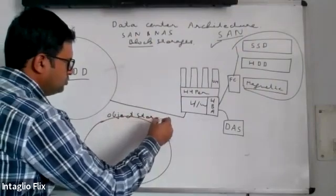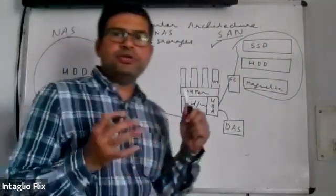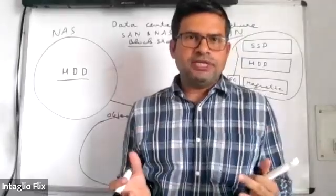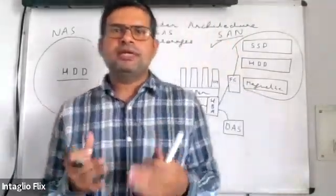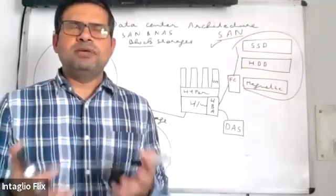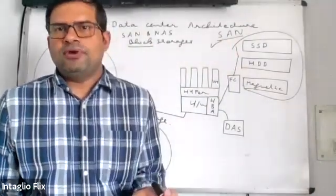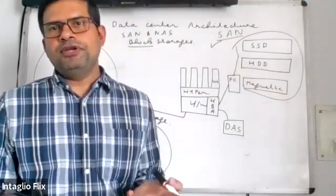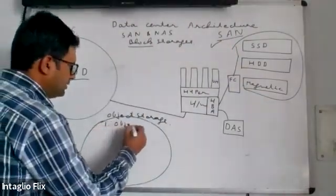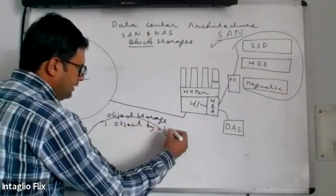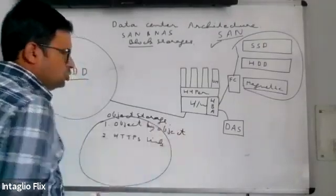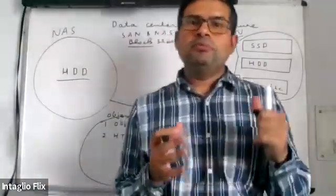There is another type of storage known as object storage. Object storage is a global storage — it is not attached to a specific data center. In object storage, every object is assigned an HTTPS link. For example, files uploaded to Google Drive over 25 MB are assigned an HTTPS link, and all YouTube videos have HTTPS links. In object storage, data is stored object by object, and every object has an HTTPS link.